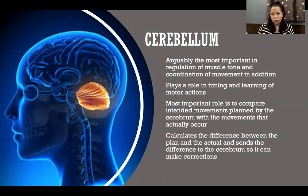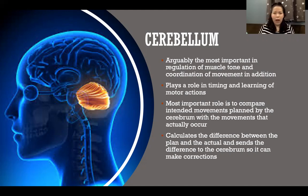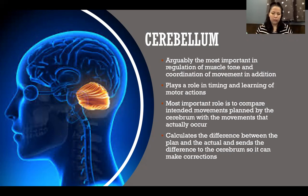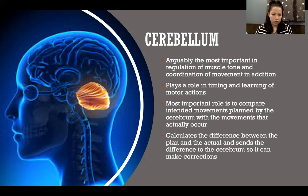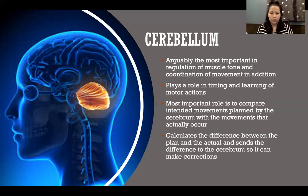The cerebrum creates motor plans that go out to the body to tell the muscles how to contract, how much force to produce, in what direction the force should be produced, and which muscles should activate. It's creating these complex plans for how the body should move, sending those plans out to the body, and a copy of those plans also goes to the cerebellum. The cerebellum then receives sensory information from all around the body, bringing that sensory information back to tell what is actually happening.